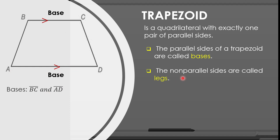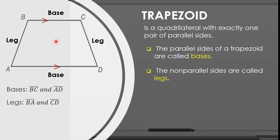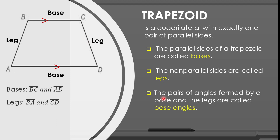Second, the non-parallel sides are called legs. So, the non-parallel sides here are side BA and CD, and they are the legs of this trapezoid. The last property is that the pairs of angles formed by a base and the legs are called the base angles.